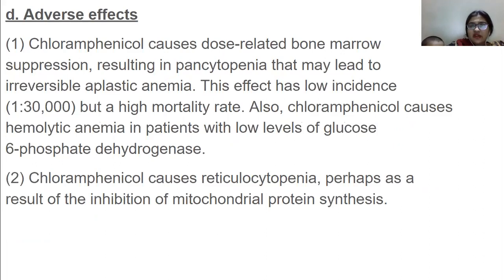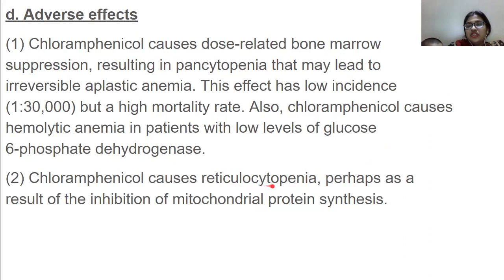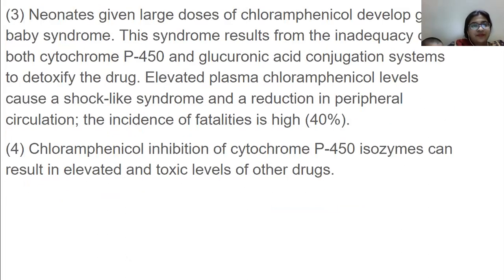Chloramphenicol causes dose-related bone marrow suppression resulting in pancytopenia that may lead to irreversible aplastic anemia. This effect has a low incidence but high mortality rate. Chloramphenicol also causes hemolytic anemia in patients with low levels of glucose-6-phosphate dehydrogenase. It causes reticulocytopenia, perhaps as a result of inhibition of mitochondrial protein synthesis — the reticulocyte being the main cell from which further blood cells are developed. Neonates given large doses of chloramphenicol develop gray baby syndrome.